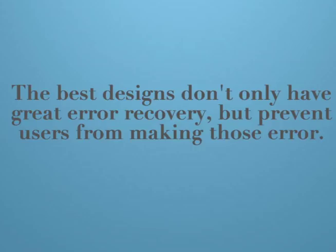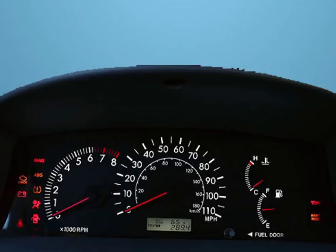If you look at a car dashboard, we have excellent error prevention. We don't want something to go wrong when we're driving at 80 miles an hour on the highway. A car dashboard clearly and efficiently informs the user of what will go wrong if nothing is altered or fixed — if your engine is about to overheat, you are warned in advance so you can address the problem in a timely fashion. Always make sure that your system has efficient error prevention.